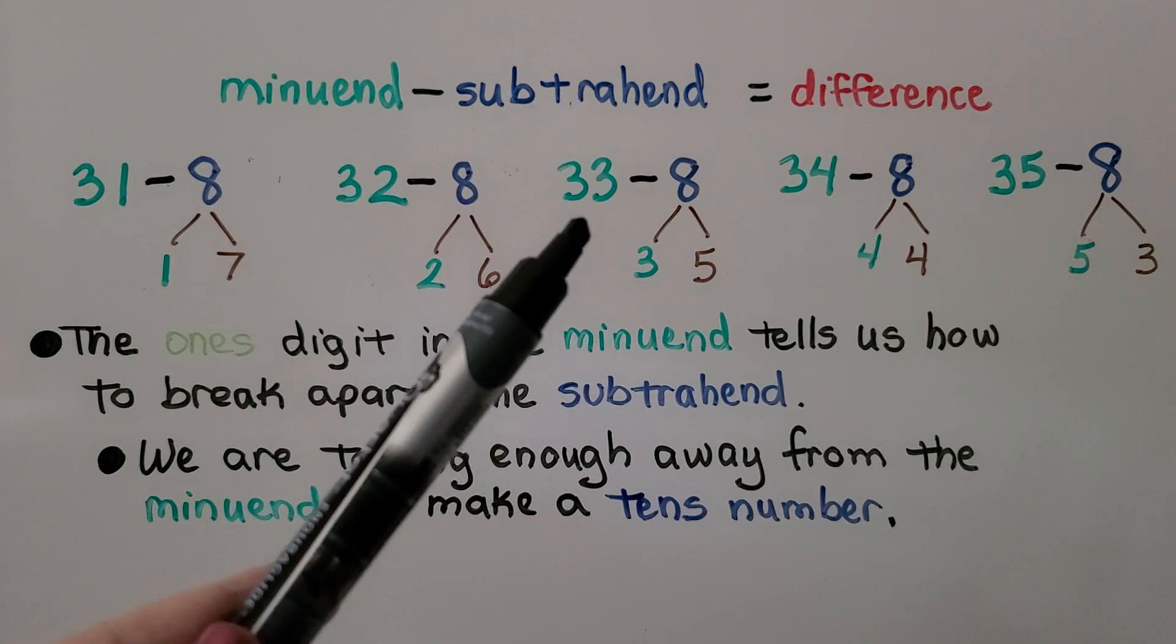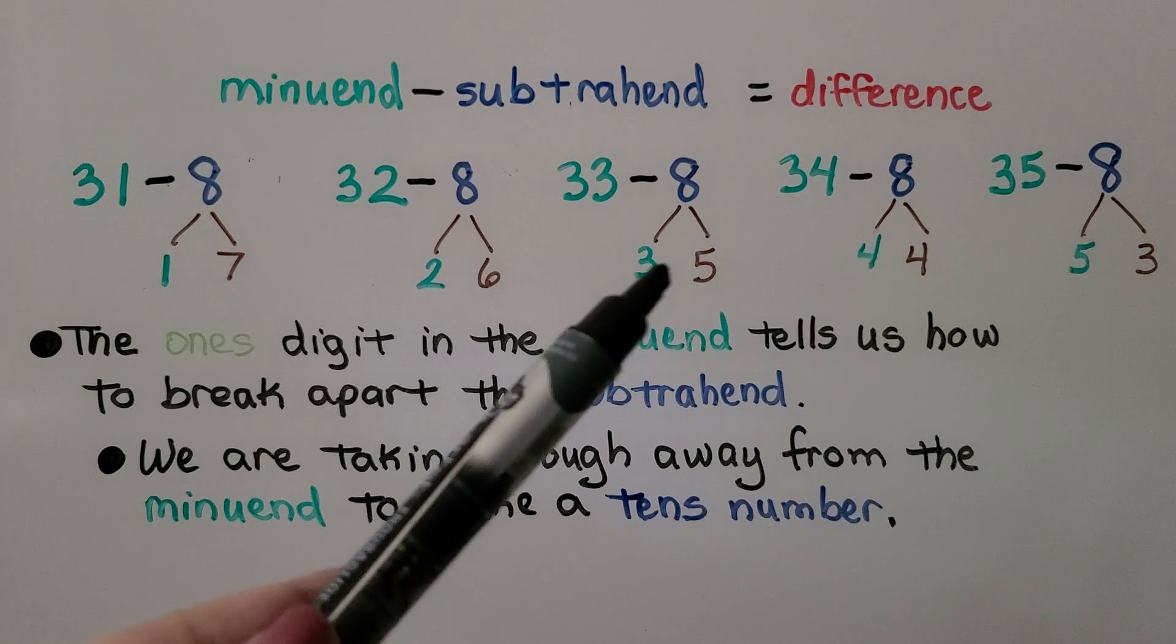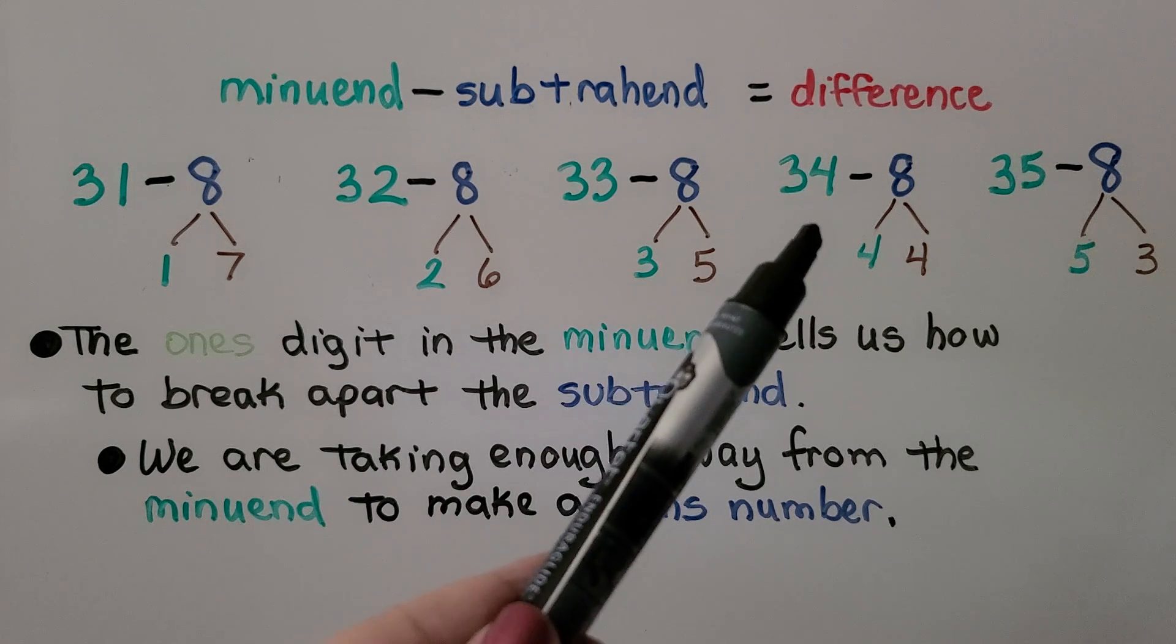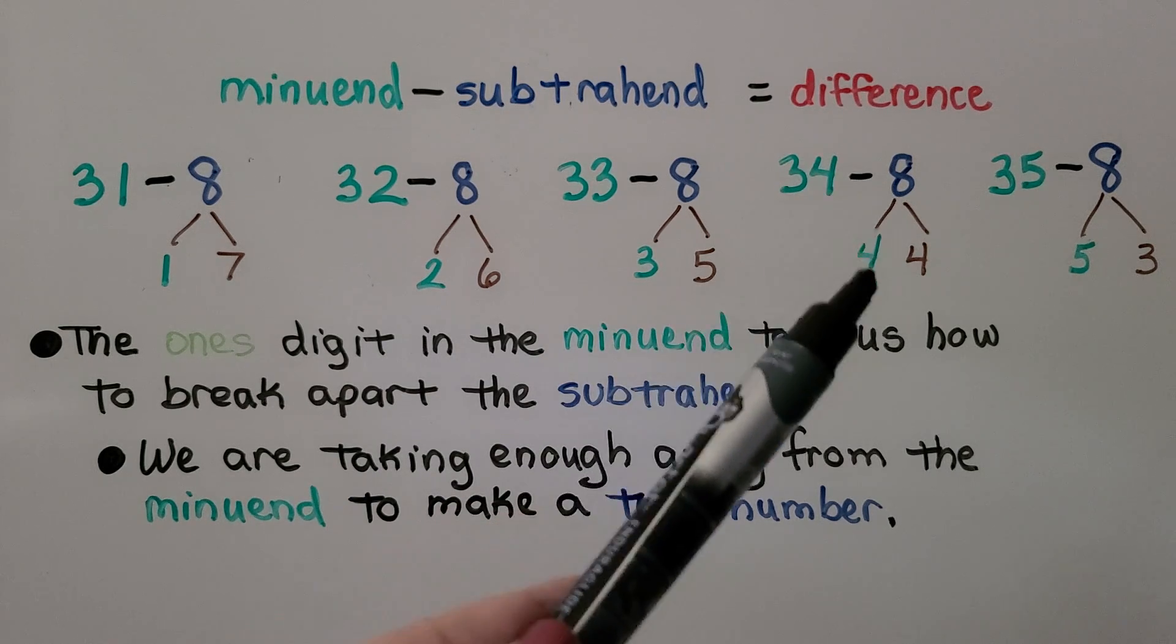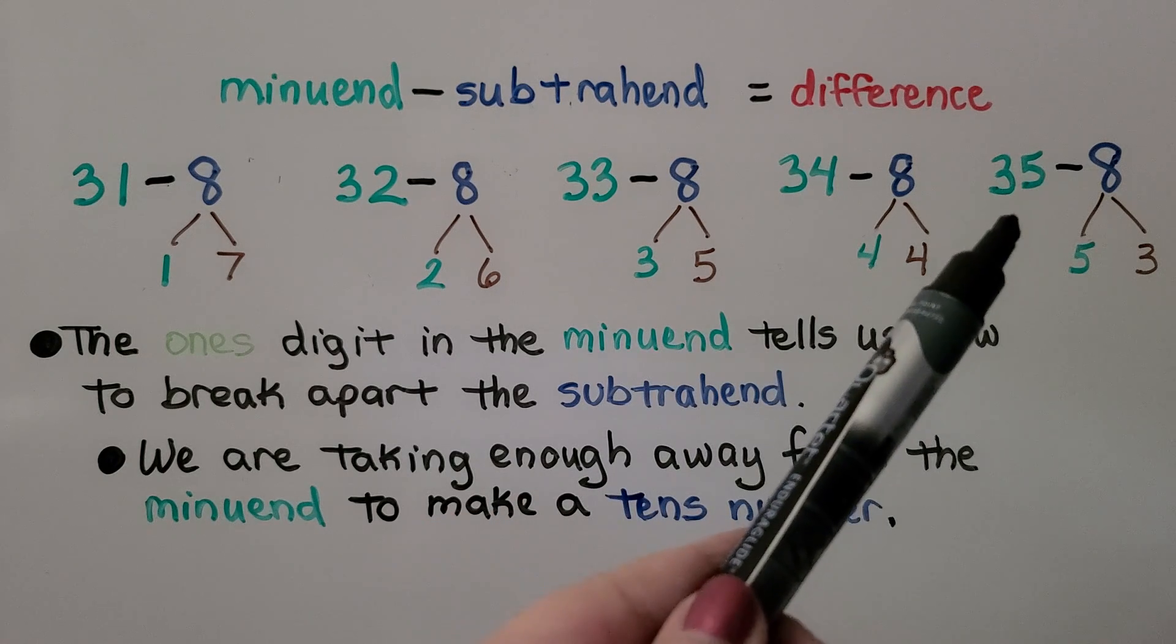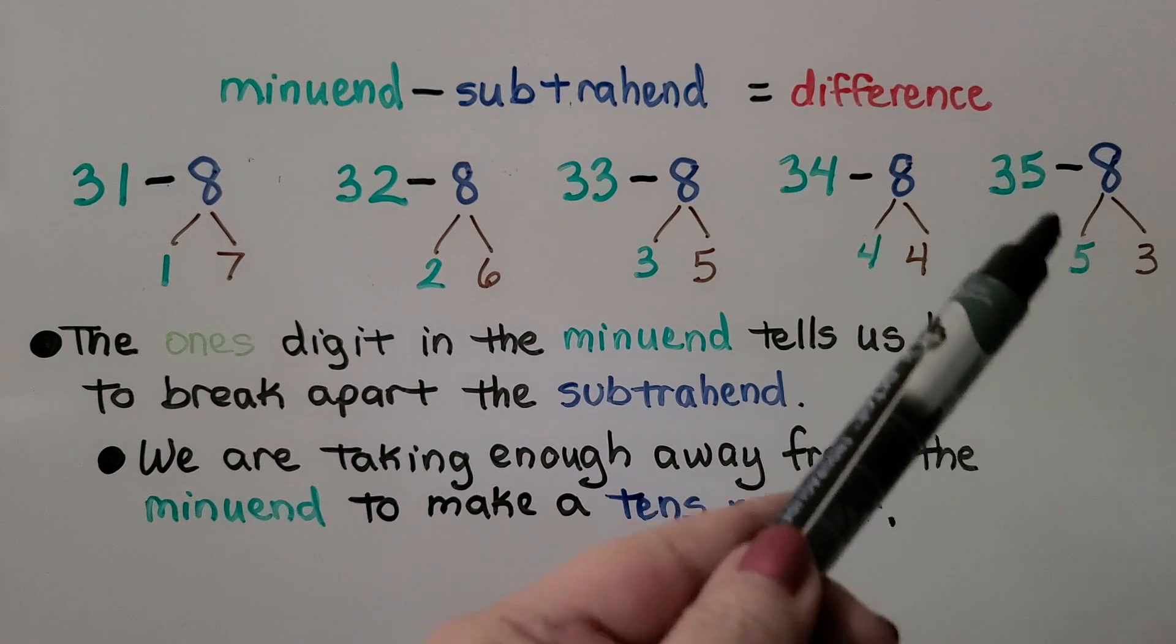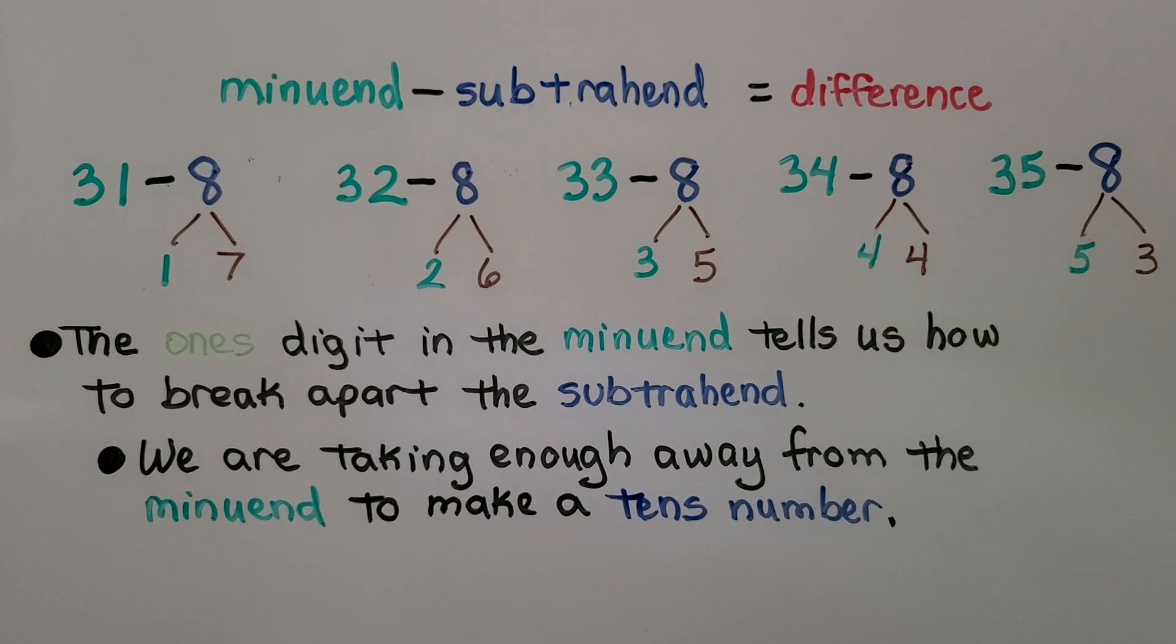If we have 33 minus 8, we have a 3 here, so one of the addends will be 3. We have 3 and 5. If we have 34 minus 8, one of the addends is 4, so we have 4 and 4. If we have 35 minus 8, then one of the addends is 5. We have 5 and 3. We're taking enough away from the minuend to make a tens number.